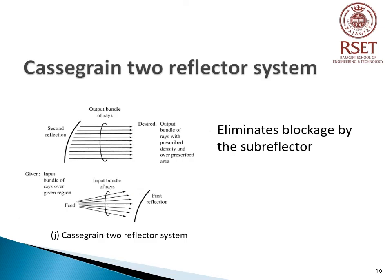The figure shows a Cassegrain 2-reflector system. As shown, we have two partial reflectors. The rays from the feed fall on the first reflector, are reflected, and fall on the second reflector, and finally after the second reflection they are converted to parallel rays. The input bundle of rays is initially intercepted by the subreflector and then by the main reflector. Ultimately, after two reflections, the output is a bundle of rays with prescribed amplitude and phase distributions. Thus, the blockage by the subreflector can be avoided by this Cassegrain 2-reflector system.